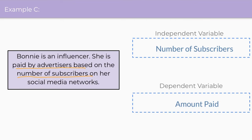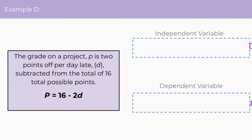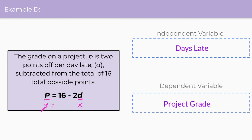In example D, we have a word problem with an equation. The grade on the project P is two points off per day late D, subtracted from 16 total possible points. We can use the equation — since equations follow the form Y equals something with X on the other side — P is the Y and D is the X. That also makes sense reading the problem: the number of days late affects the project grade, so the independent variable is the number of days late and the dependent variable is the project grade, because the project grade does not affect how many days late it was.